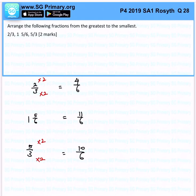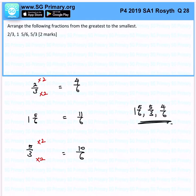We can easily compare them. The greatest would be 15 over 6, followed by 5 over 3, followed by 4 over 6. That is the answer for this question.